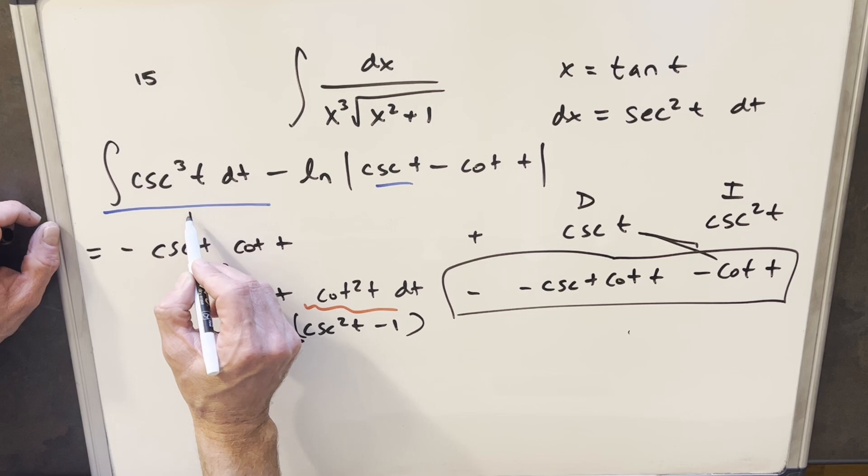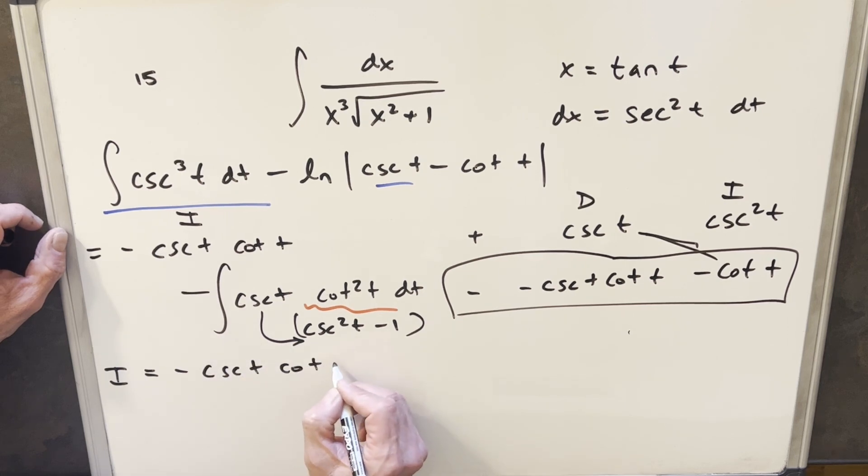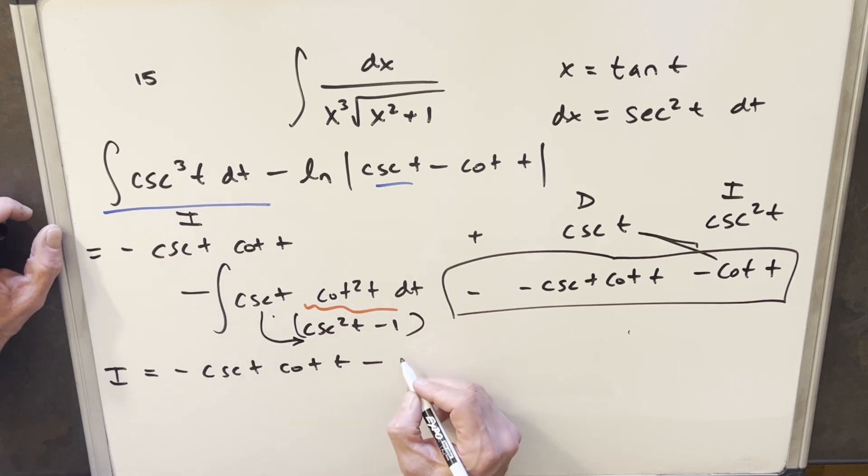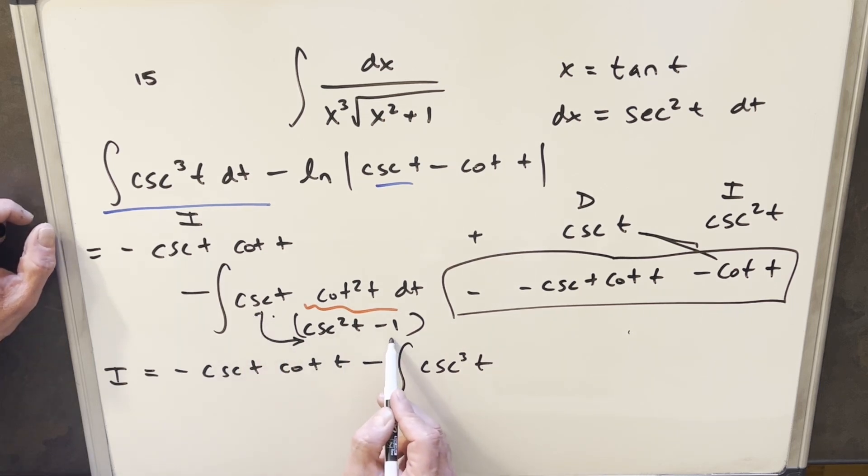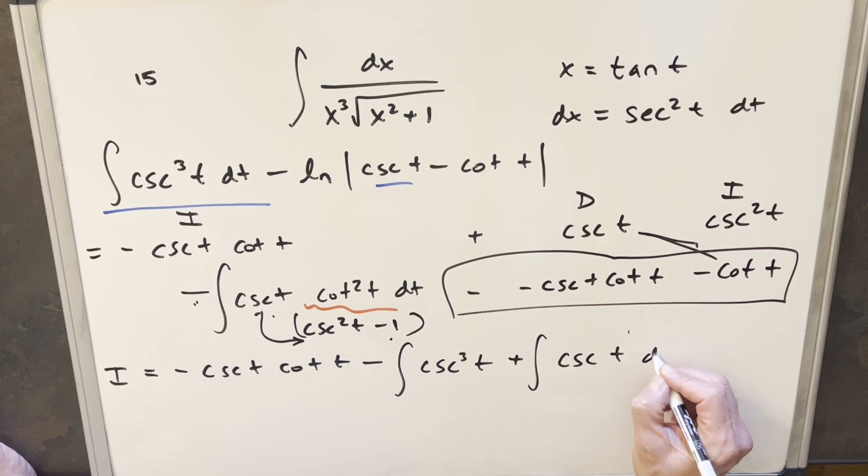This cosecant cubed that we're trying to find, I'm going to label this one i. So we can just keep track of everything. So we're going to have i equals this, which is minus cosecant t cotangent t. Then we're going to have minus, then we distribute in cosecant to cosecant squared. This is going to give me the integral of cosecant cubed t. Here we're distributing a cosecant to a minus 1, but we have a minus in front. Minus and minus cancels to give me a plus, and we're integrating cosecant t dt here.